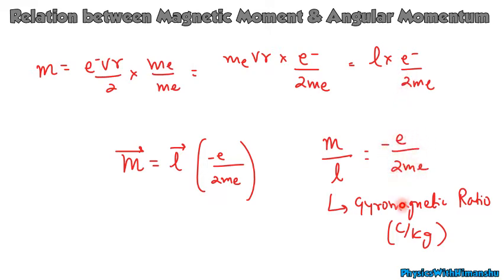This is called the gyromagnetic ratio, with SI unit coulomb per kilogram (C/kg). Gyromagnetic ratio is the ratio of magnetic moment to angular momentum. The negative sign indicates that the direction of magnetic moment is opposite to that of angular momentum. So m = L × (-e/2me), where e is electron charge and me is electron mass.